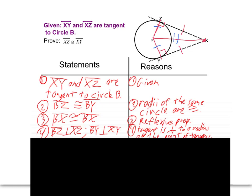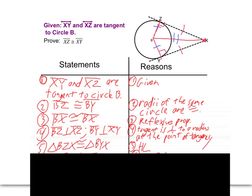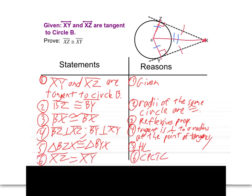Now, from the theorem we just learned, those two perpendiculars make right angles — because a tangent is perpendicular to a radius at the point of tangency. From that, we can deduce that these are right triangles, and we've got a congruent leg and a congruent hypotenuse. So we're going to use hypotenuse-leg to prove the triangles congruent. And once we've got those two triangles congruent, we can use CPCTC to show that XZ and XY are congruent. And there we go.